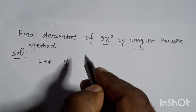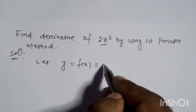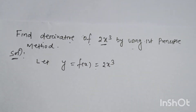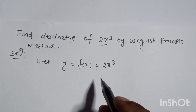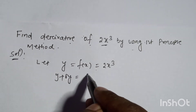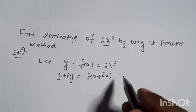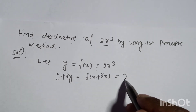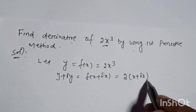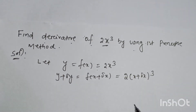We can write: let y equal to f of x is equal to 2x cubed. Then y plus delta-y is equal to f of x plus delta-x, which is equal to 2 times (x plus delta-x) to the power cube.